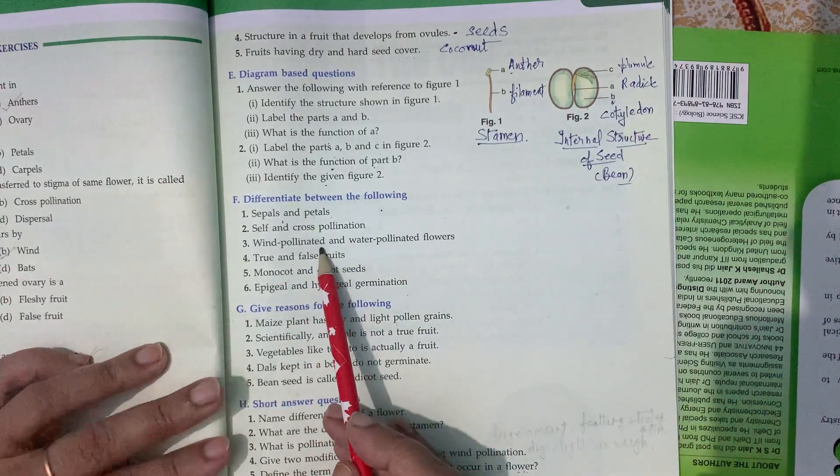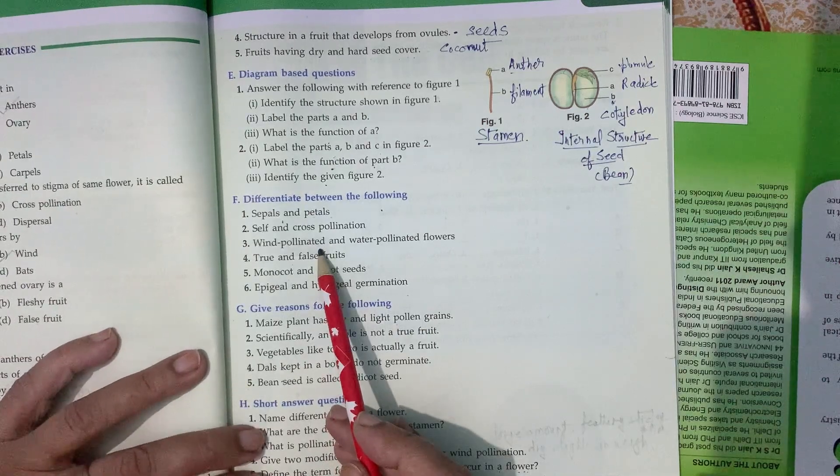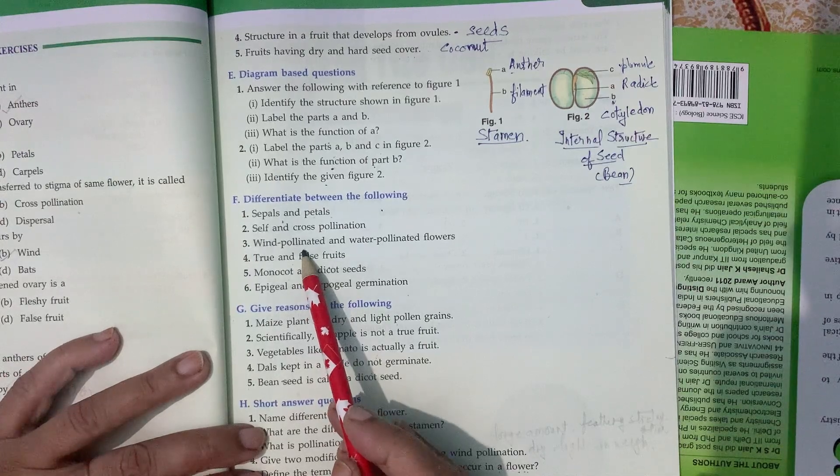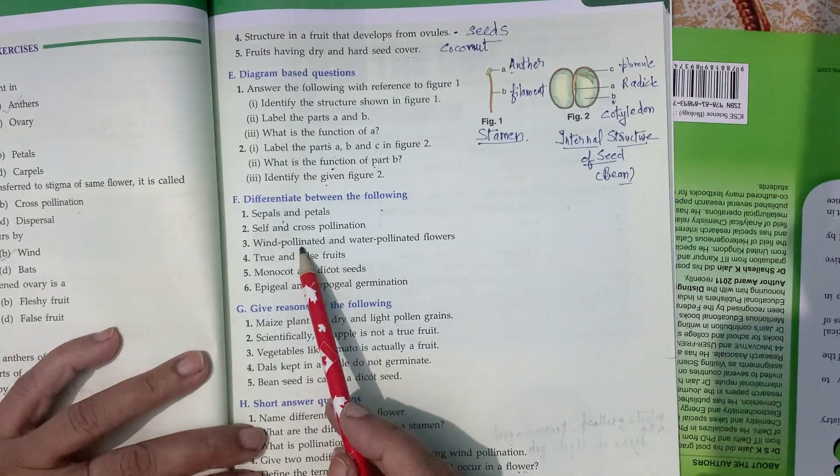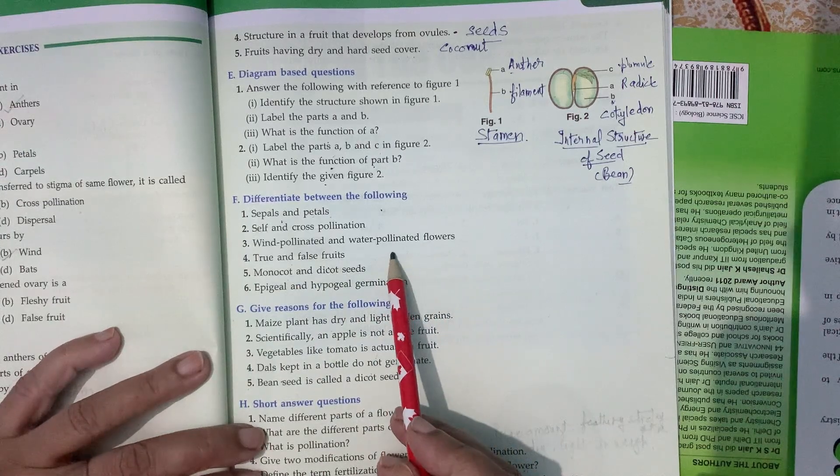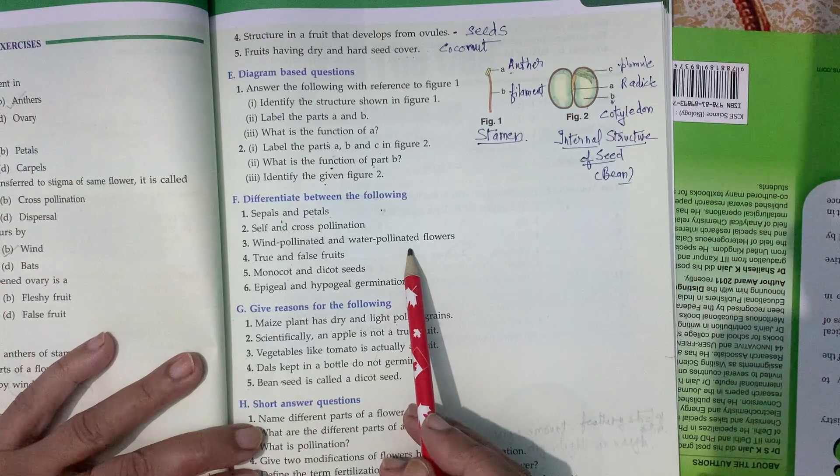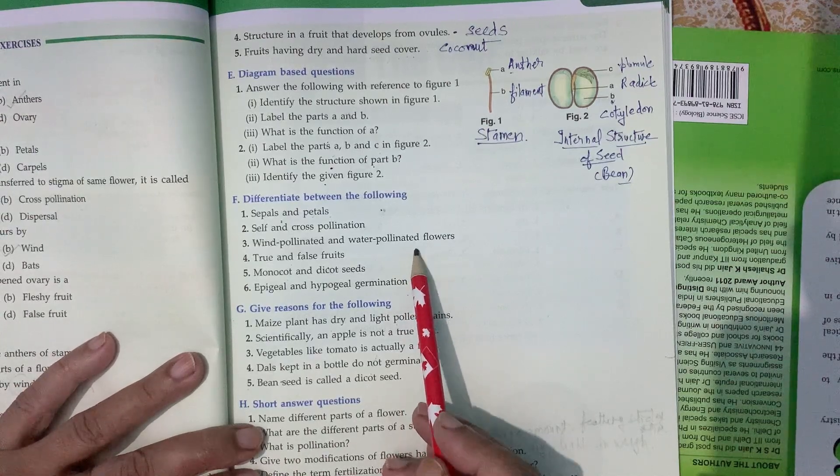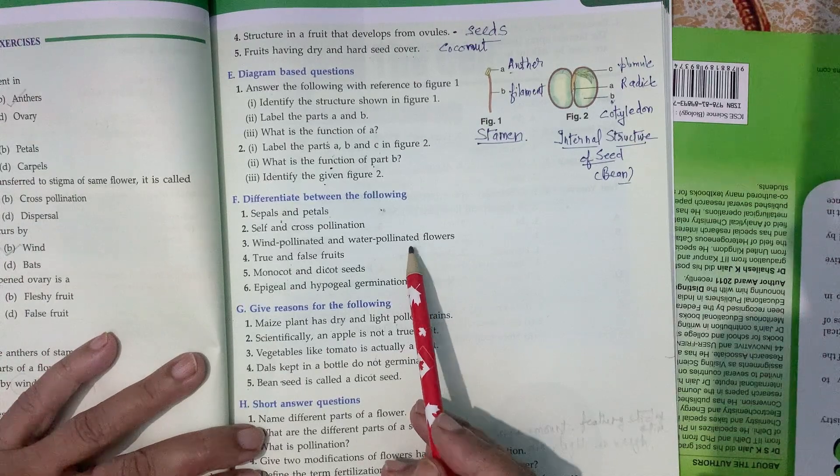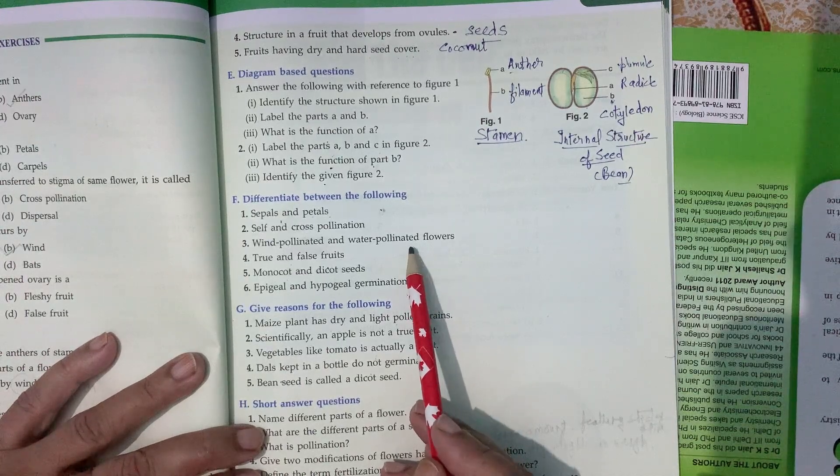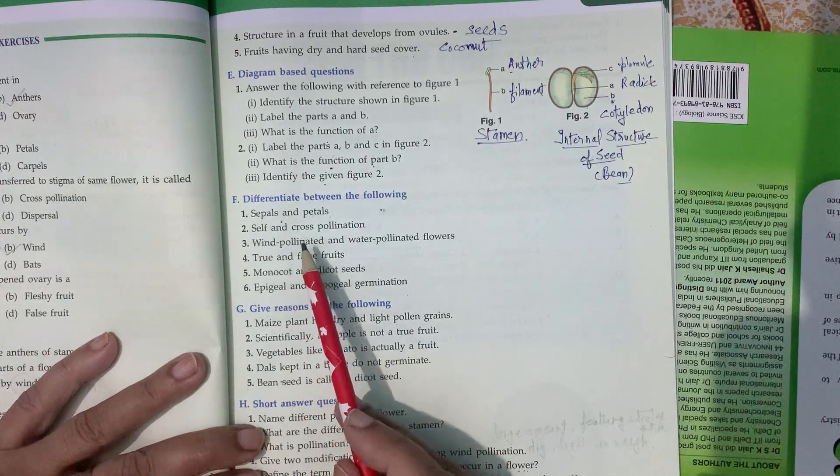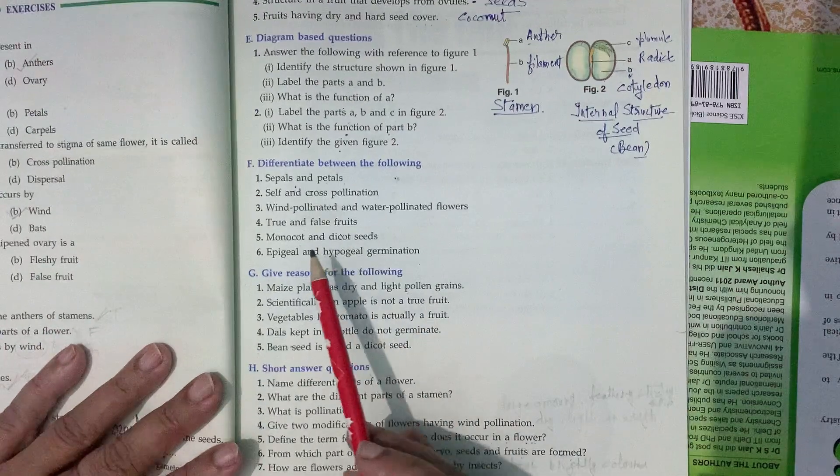Wind pollinated and water pollinated flowers. Wind pollinated flowers are not showy. They are light in weight so they can easily be carried. Water pollinated flowers are large. They remain under water when they mature, then float on the surface of water. Male flowers float on the surface of water, and male gametes float in the air.